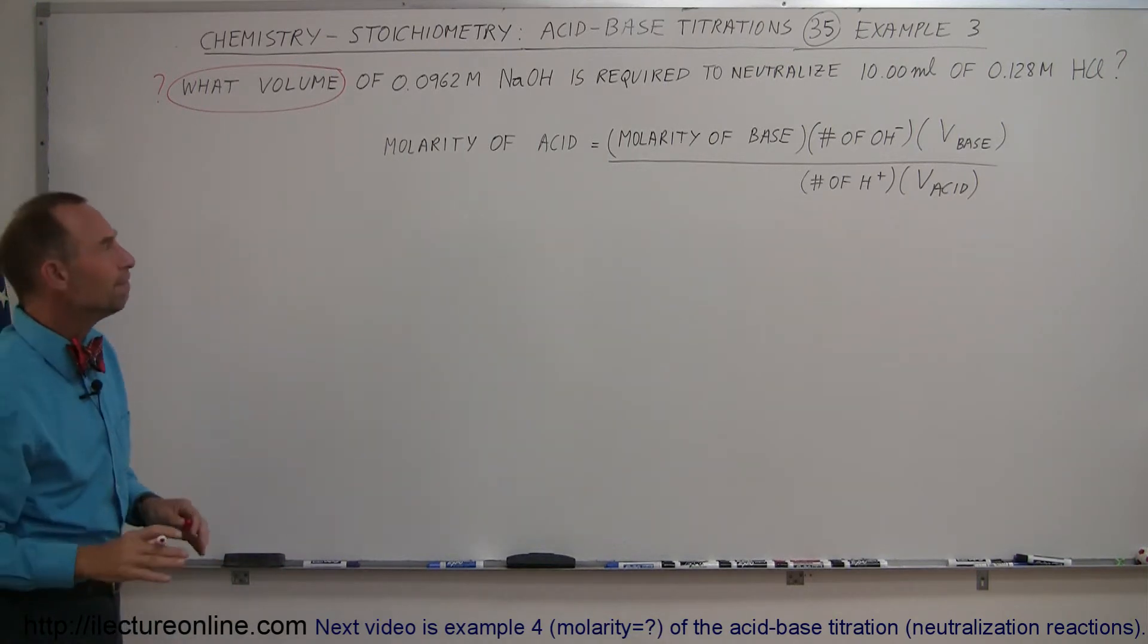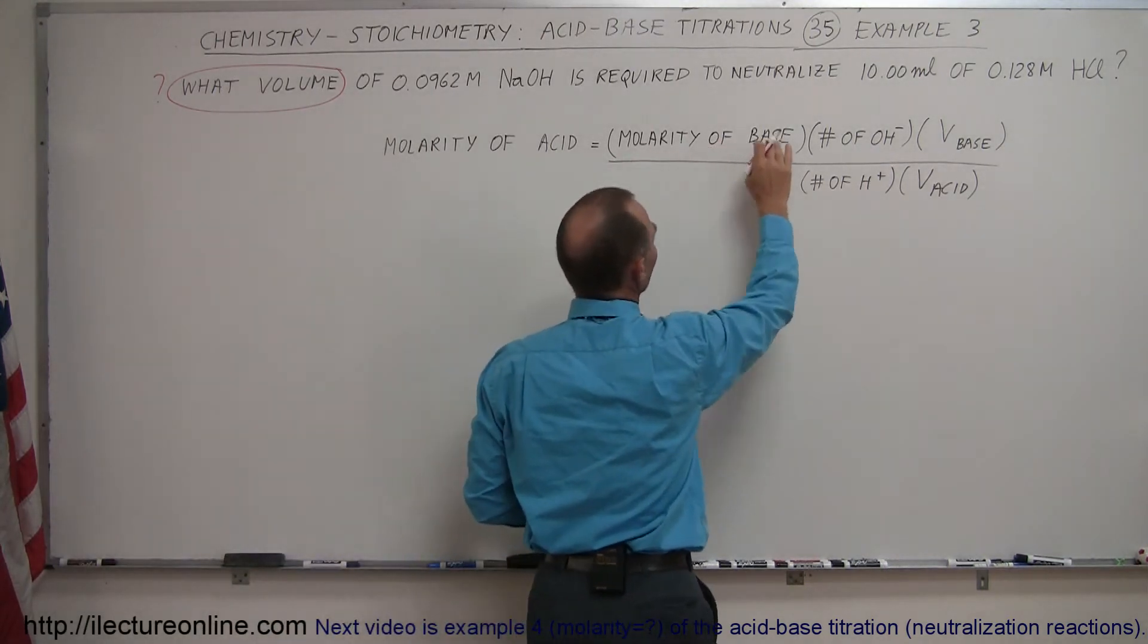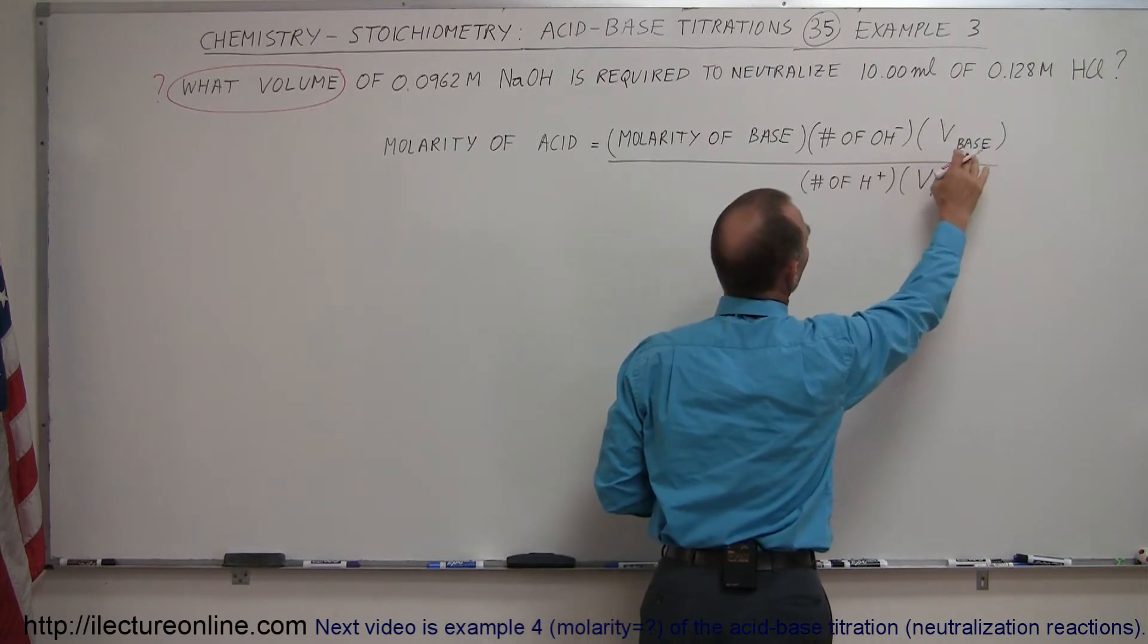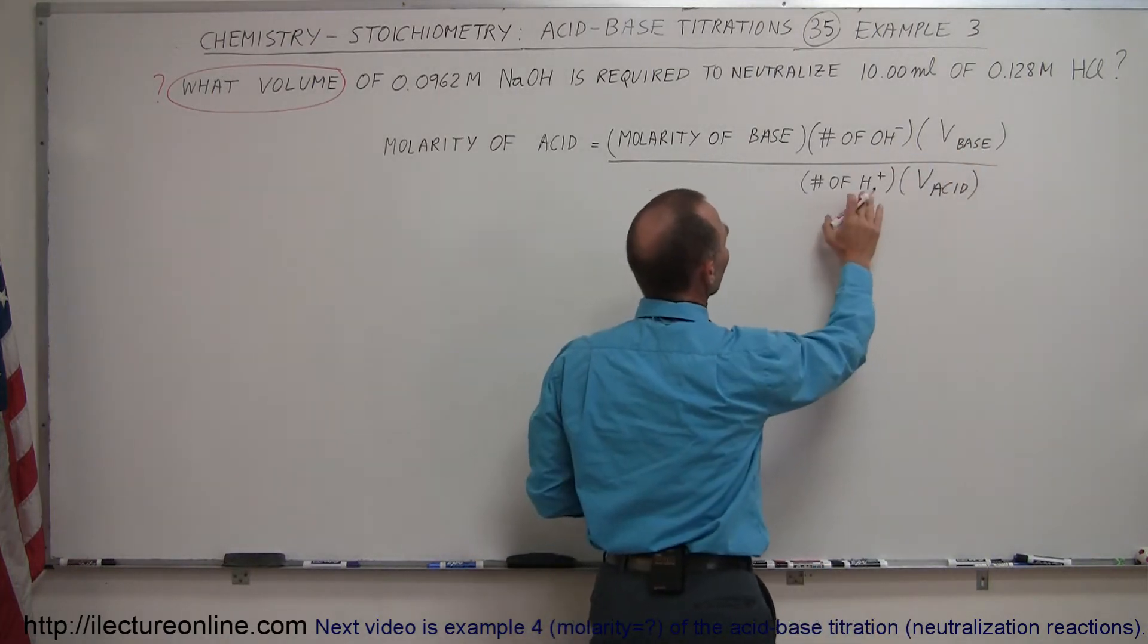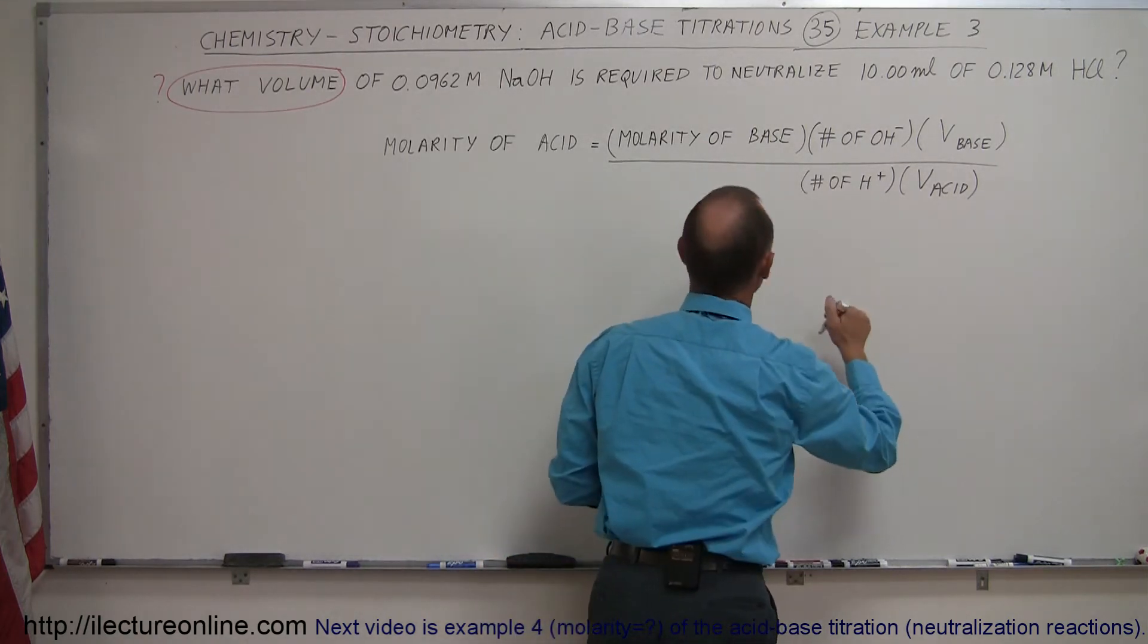So the equation is still the same. The molarity of the acid equals the molarity of the base times the number of hydroxide ions produced per molecule times the volume of the base, divided by the number of hydrogen ions produced per molecule times the volume of the acid.